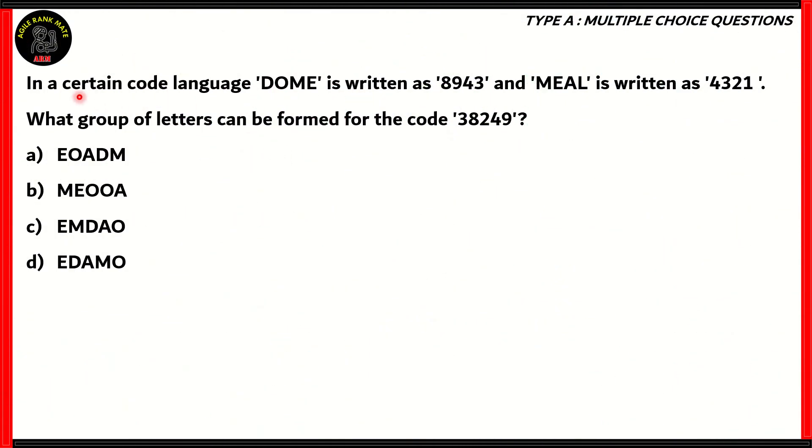So let's start off with our first question. In a certain code language, Dome is written as 8943 and Meal is written as 4321. What group of letters can be formed for the code 38249? Is it EOADM, MEOOA, EMDAO, or EDAMO? So, how do we solve this question?